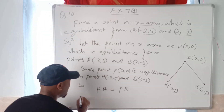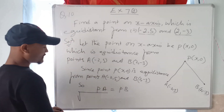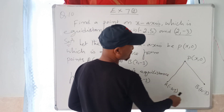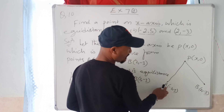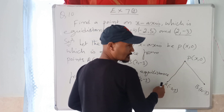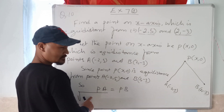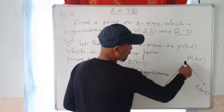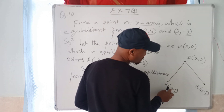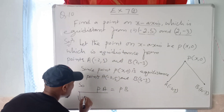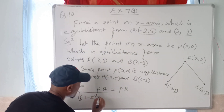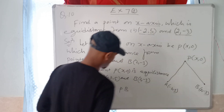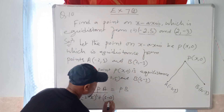The distance formula is under square root: (x₂ minus x₁) bracket holding square, plus (y₂ minus y₁) bracket holding square. For PA, the final position is A and initial position is P. So PA equals the square root of (-2 minus x) holding square, plus (5 minus 0) holding square.